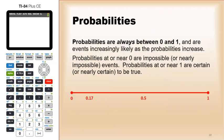All right, the first rule of probability is that probabilities are always between 0 and 1, and these are events that are increasingly likely as the probabilities increase. So probabilities that are near zero are essentially events that are impossible or nearly impossible.